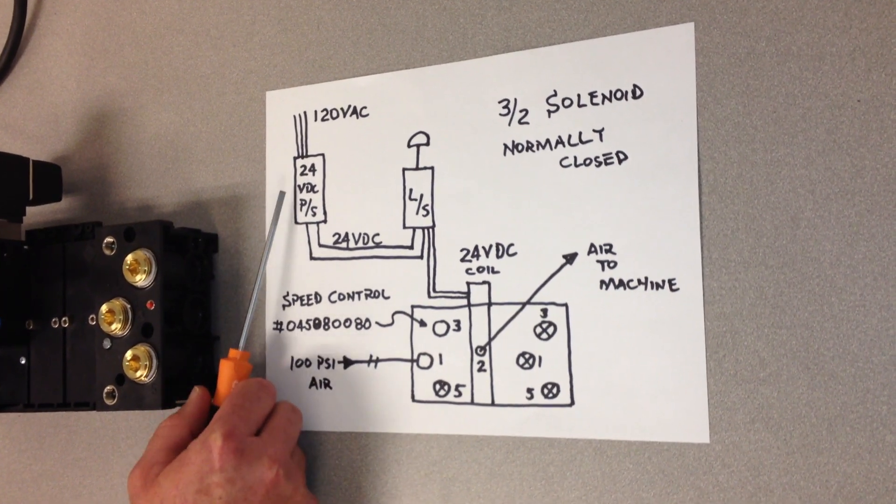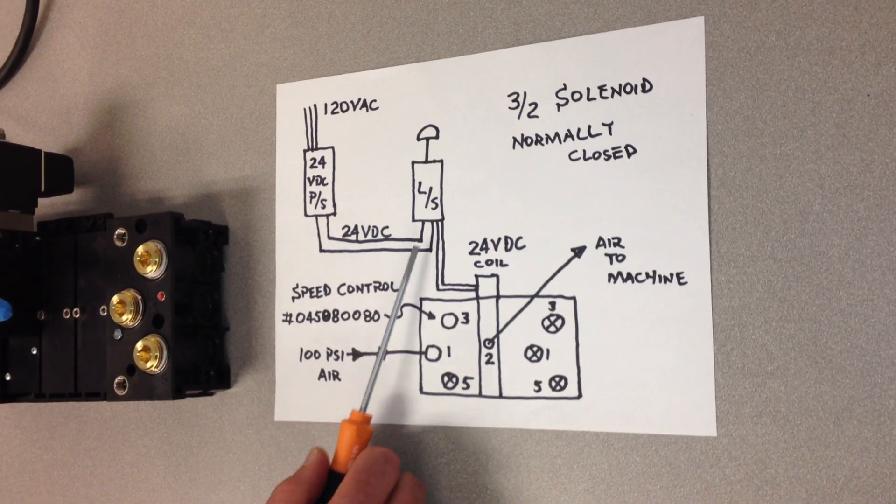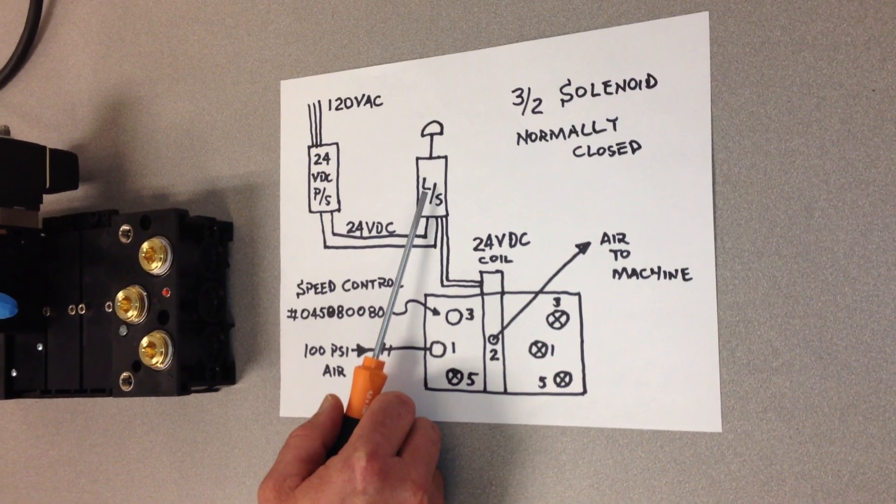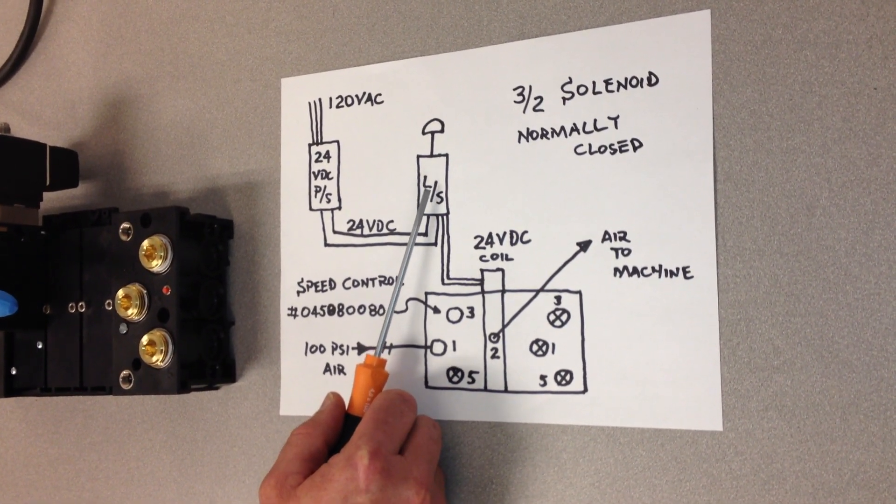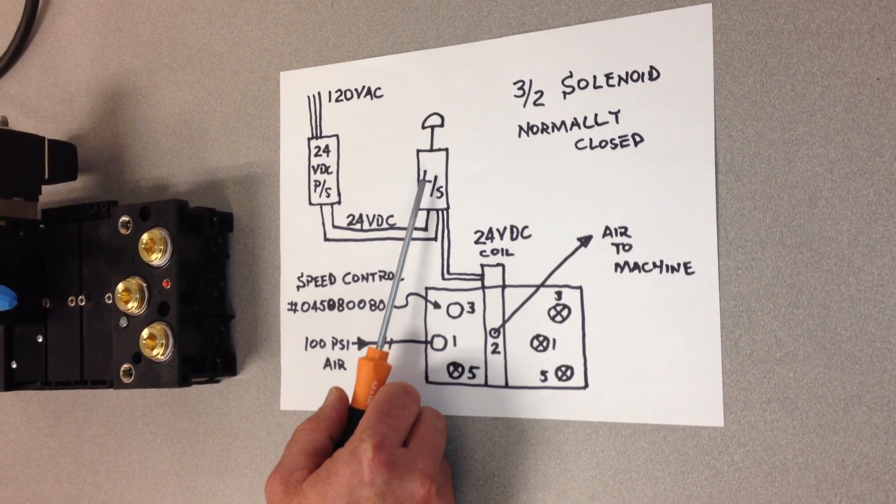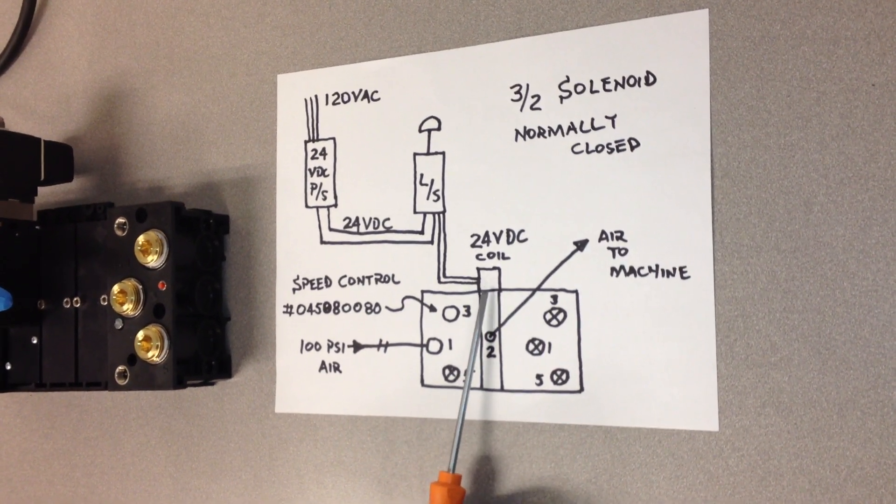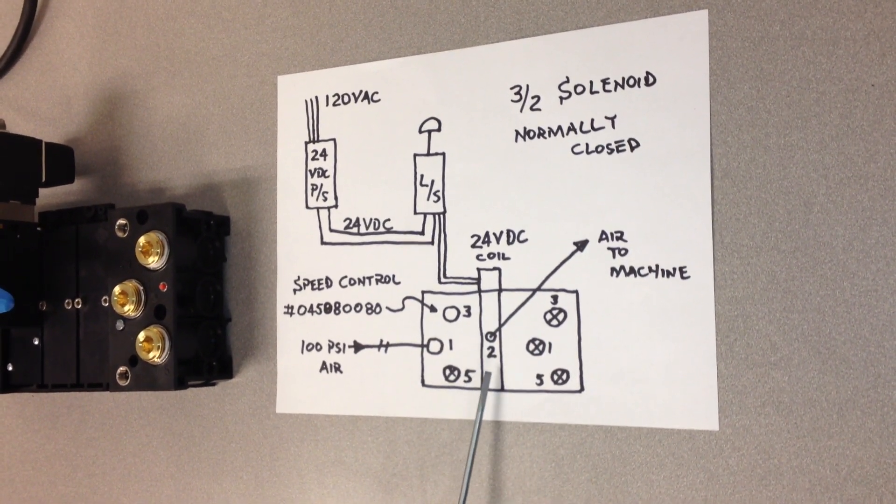We've got 120 volts coming into a 24-volt power supply. The power supply is then going through a normally open contact in a mechanical limit switch. And when the plunger is pushed down on the limit switch, it supplies power, 24 volts DC power, to the coil of a three-way solenoid.